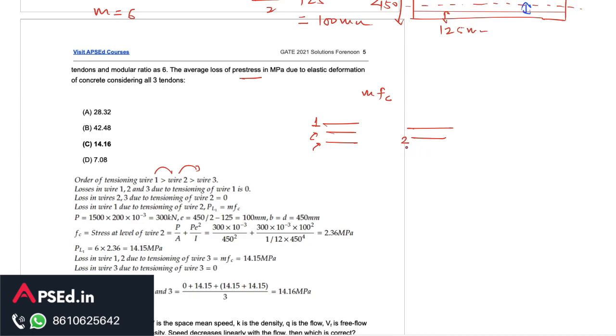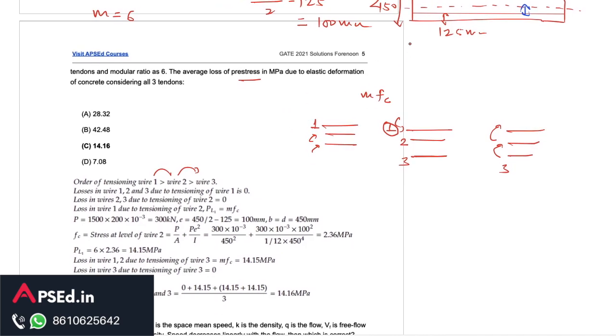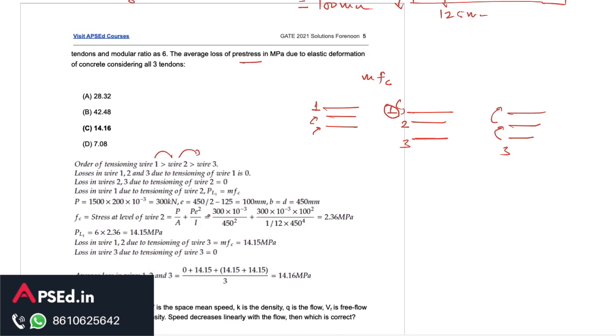If we take one by one so we have these three wires. Once we induce tension in the first one there will be no tension in the second and third because they are not tensioned yet, then in that step there is no loss. If we talk about tensioning the second one, when we tension the second one there will be loss in the first one because the first tendon is already tensioned whereas there will be no loss in the third one. When we tension the third one then there will be loss in the second one as well as in the first one. For the simplicity they gave that all these tendons are straight and at the same level so we will need to calculate this stress fc only once.